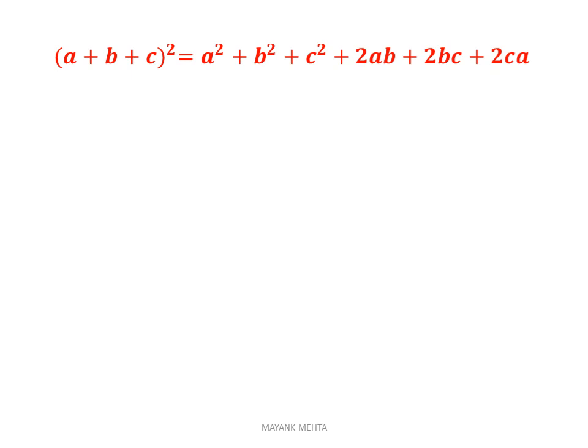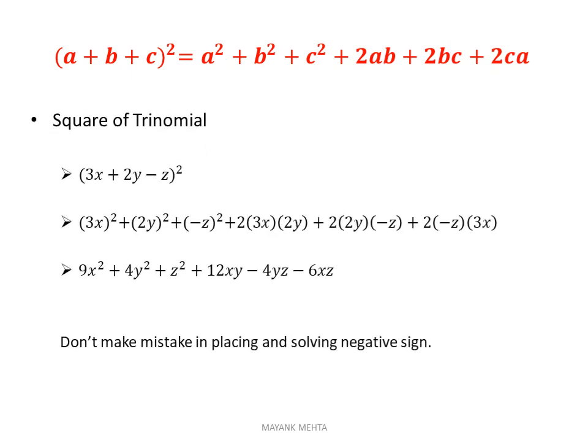The next identity is the square of a trinomial: (a+b+c)² = a² + b² + c² + 2ab + 2bc + 2ca. Write these identities two or three times in your book so you don't forget them. I have taken an example with a negative sign as well, so you can see what to do when there is a negative term in a trinomial: (3x+2y−z)².